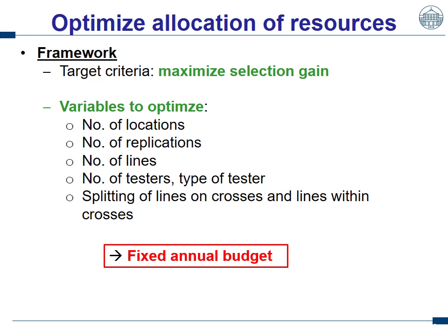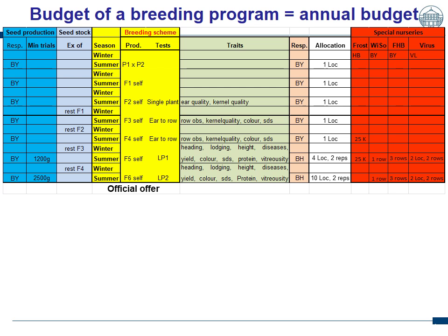The most important thing is we assume a fixed annual budget, which is full reality. A plant breeder like me has a budget each year and should spend all of it. Therefore, we define in the optimizations a fixed budget, because we cannot compare a breeding scheme where I invest double the money — that is not a fair comparison. I have here shown an easy pedigree scheme with the traits selected, the allocation of resources, some specific nurseries, and the seed production and stock.